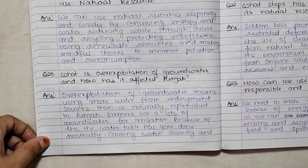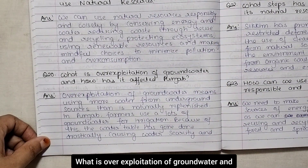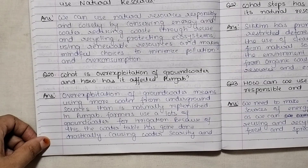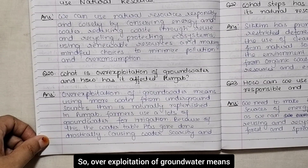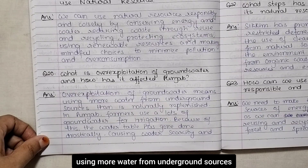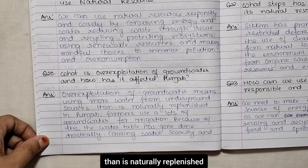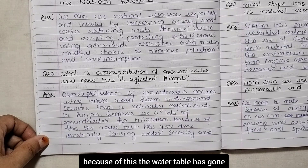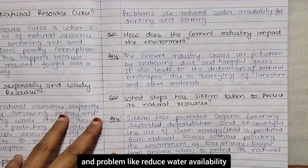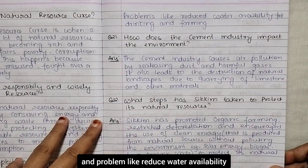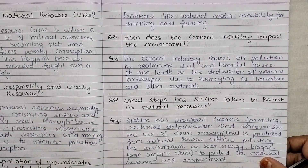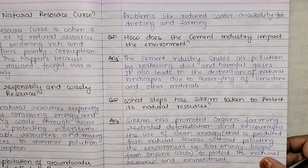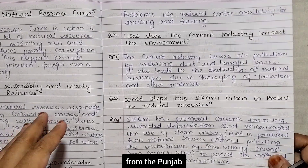Next: what is over-exploitation of groundwater and how has it affected Punjab? Over-exploitation of groundwater means using more water from underground sources than is naturally replenished. In Punjab, farmers use a lot of groundwater for irrigation, because of which the water table has gone down drastically, causing water scarcity and problems like reduced water availability for drinking and farming.